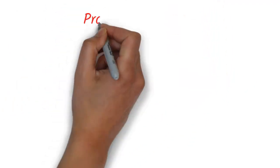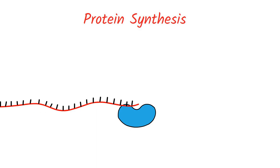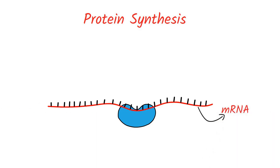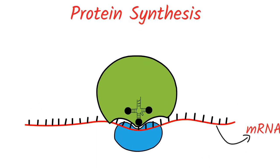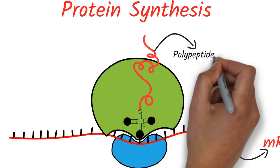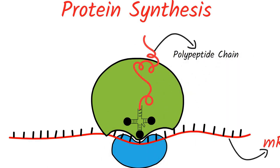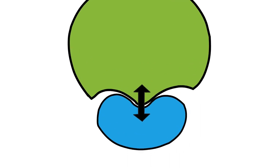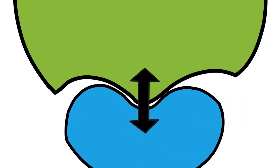During protein synthesis, the mRNA binds to the smaller subunit, while the larger subunit links amino acids by providing peptide bonds to the polypeptide chain. The two subunits are combined together, and the strength of their attachment depends on the concentration of magnesium ions.